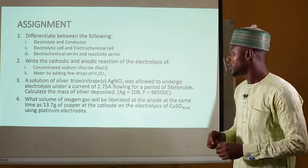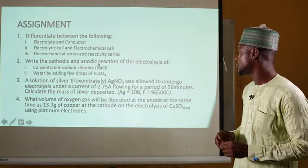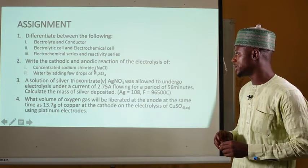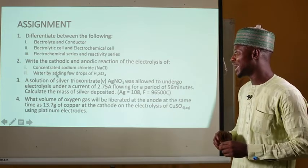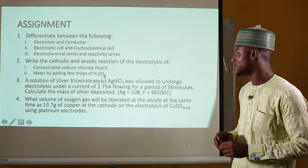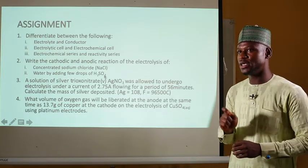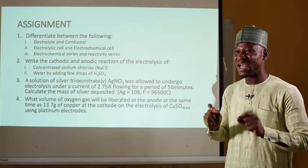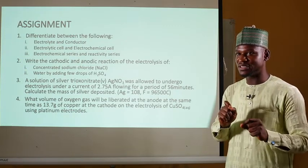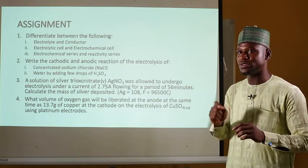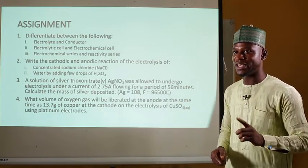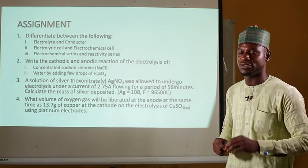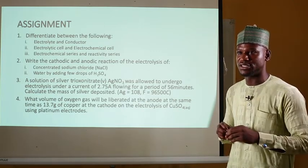Question two: write the cathodic and anodic reactions for the electrolysis of (1) concentrated sodium chloride and (2) water with a few drops of tetraoxosulfate(VI) acid — that is, acidic water. It is important to note that even a concentrated solution has water in it, but the concentration of sodium and chloride ions is greater than that of water ions. Therefore, use the second condition for preferential discharge of ions — differences in concentration.